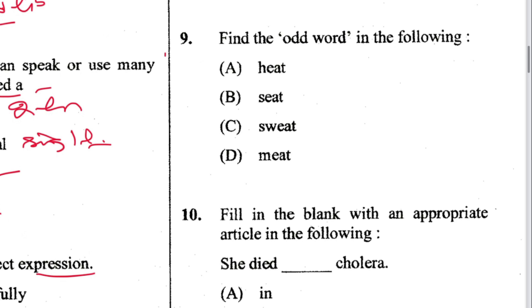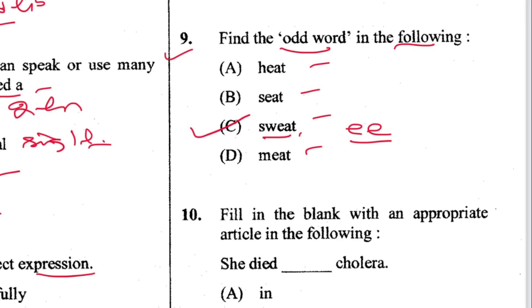Question 9: Find the odd word — heat, seat, sweat, meat. Heat, seat, and meat all rhyme; 'sweat' is different because if it were double-E it would be 'sweet.' C is the answer.